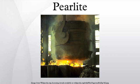Pearlite was first identified by Henry Clifton Sorby and initially named sorbite; however, the similarity of microstructure to nacre and especially the optical effect caused by the scale of the structure made the alternative name more popular. Bainite is a similar structure with lamellae much smaller than the wavelength of visible light and thus lacks this pearlescent appearance. It is prepared by more rapid cooling.